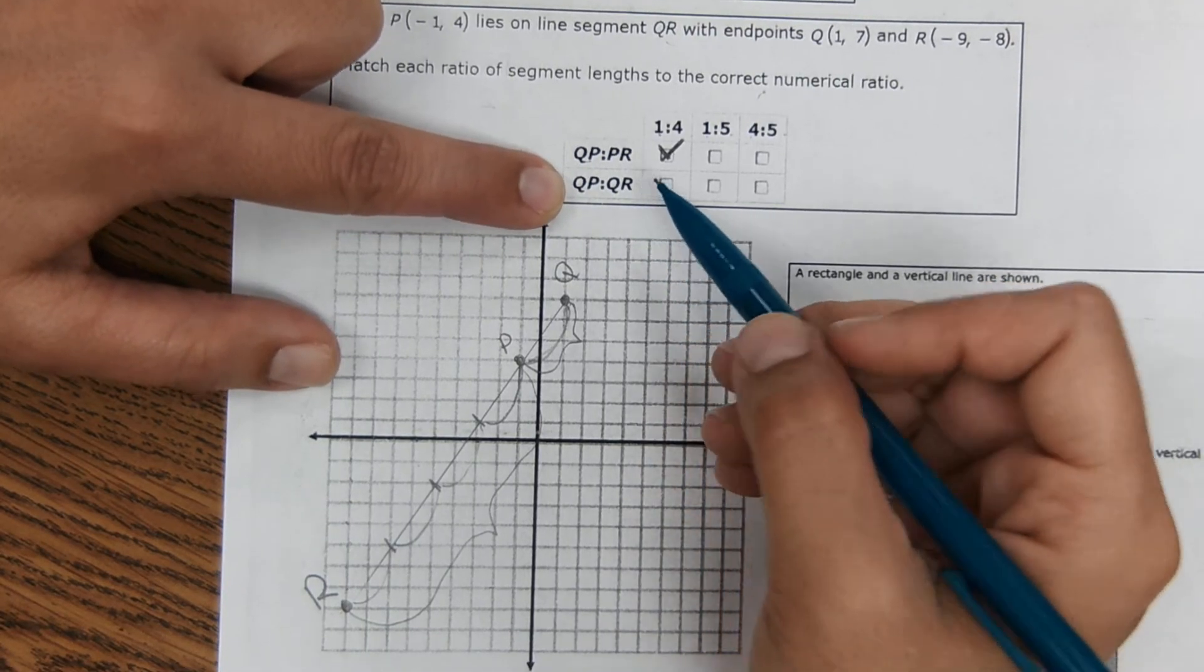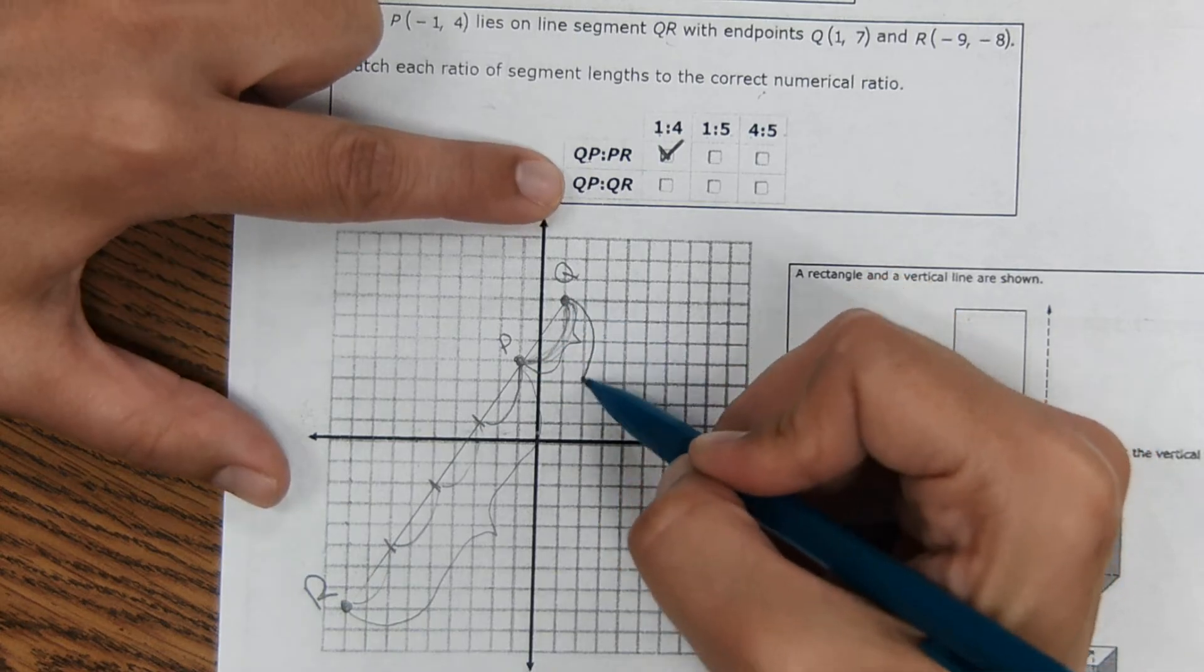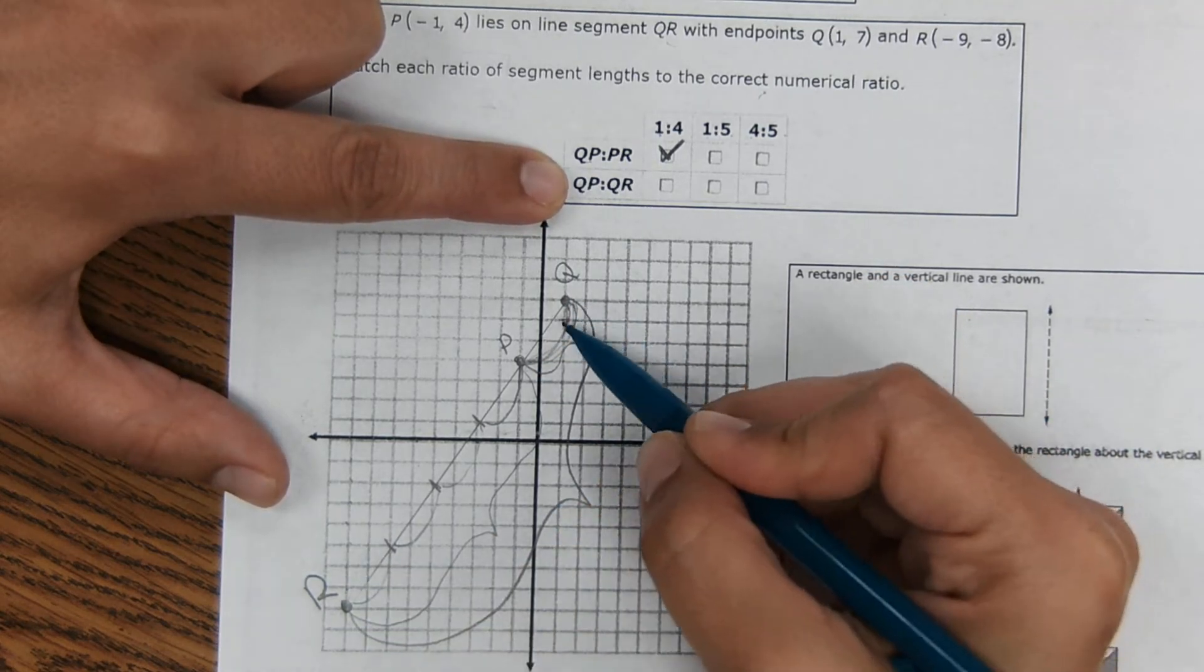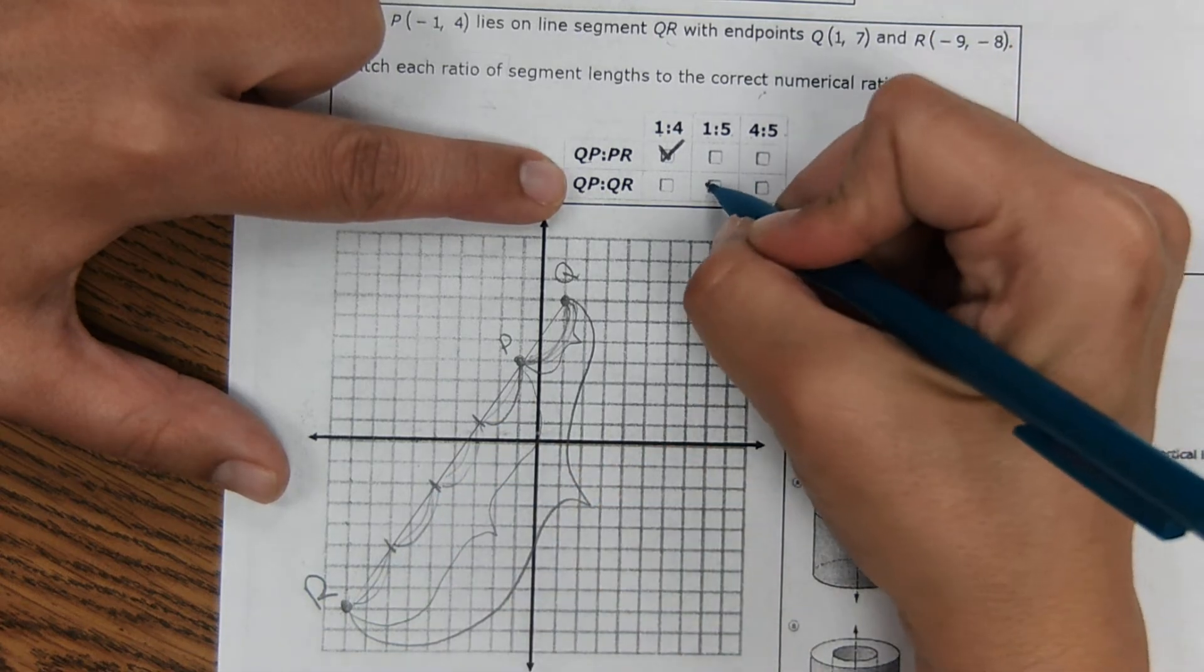And then QP to QR. QP right here. QR is the whole thing, which is one, two, three, four, five parts total. So one to five.